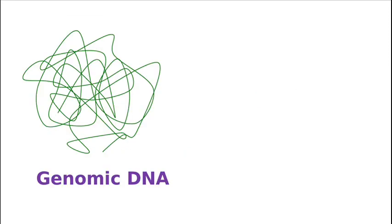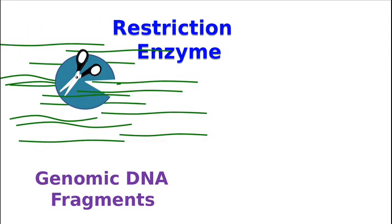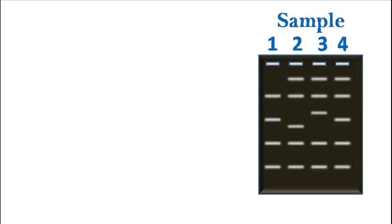The genomic DNA is first isolated and fragmented with a restriction enzyme. The DNA fragments produced by the restriction enzyme are separated by agarose gel electrophoresis.